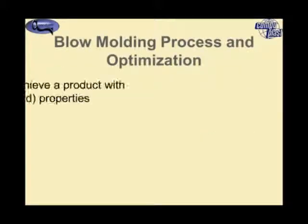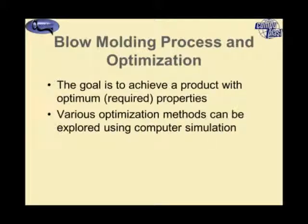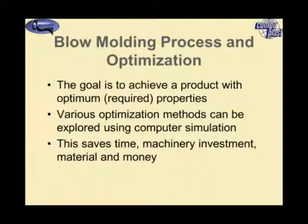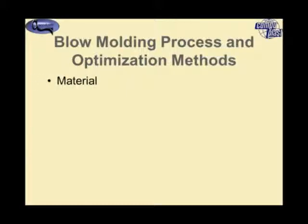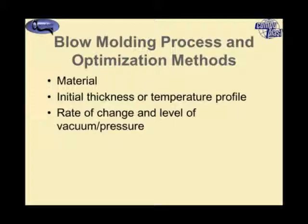The goal of optimization is to achieve the optimal or required properties, whether that be uniform thickness or particular mechanical strength properties in the final part. There are various optimization methods that can be explored using computer simulation, and of course with computer simulation you're not wasting machine time, material, or energy, so there's a significant savings. We can select the correct material with the best properties and adjust the initial thickness or temperature profile on our preform or parison.